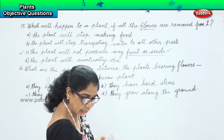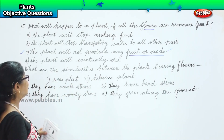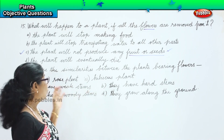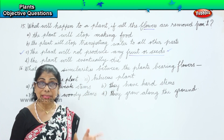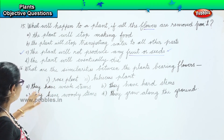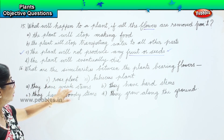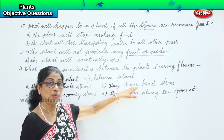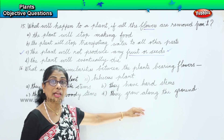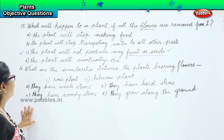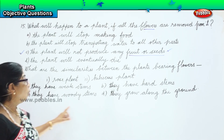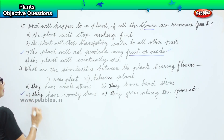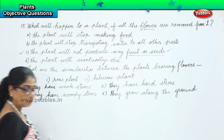We have four options. They are asking: what are the similarities between plants bearing flowers — rose plant and hibiscus plant? They have weak stems? Certainly not — rose and hibiscus do not have weak stems. They have hard stems? No, they do not have hard stems either. They grow along the ground? No. The rose plant and hibiscus plant have woody stems. That is the correct answer — they have woody stems.